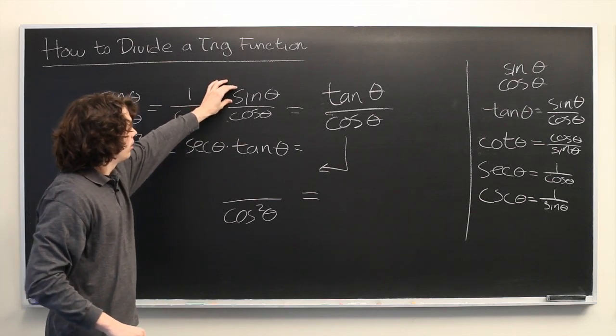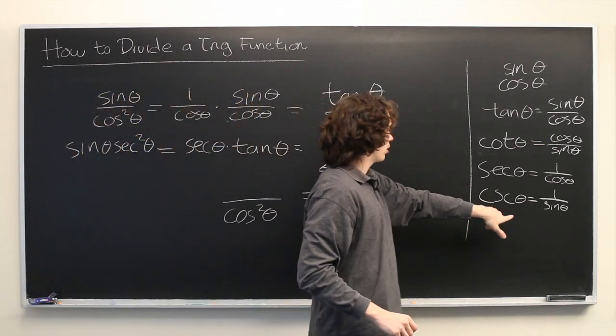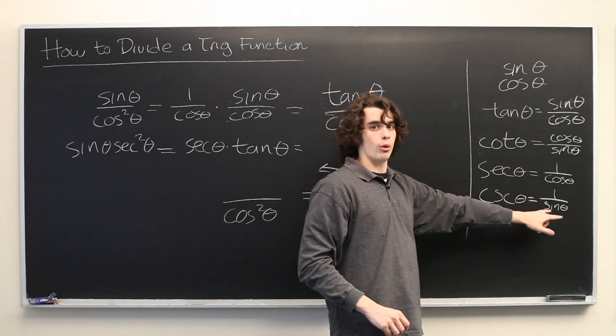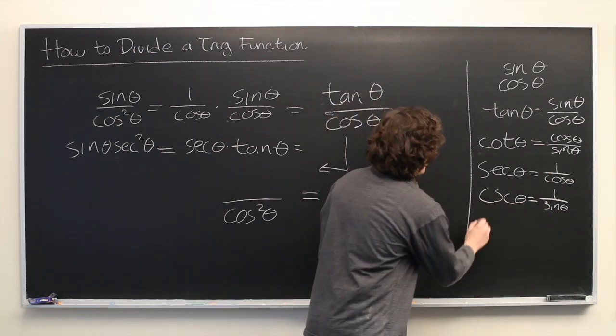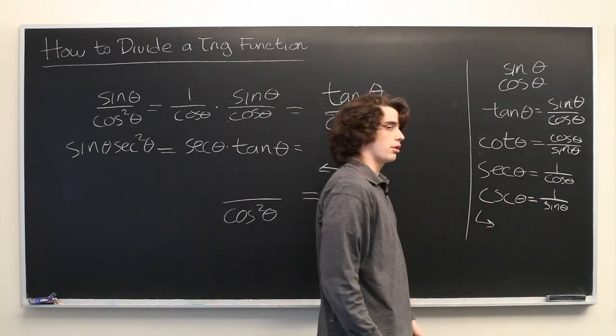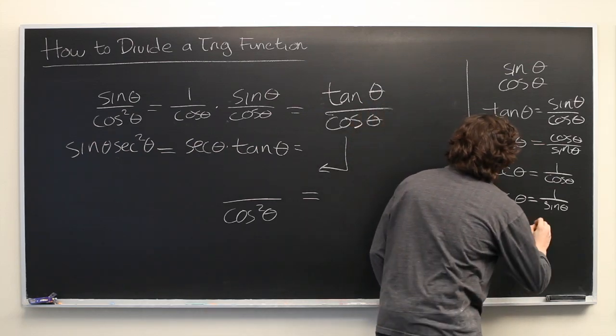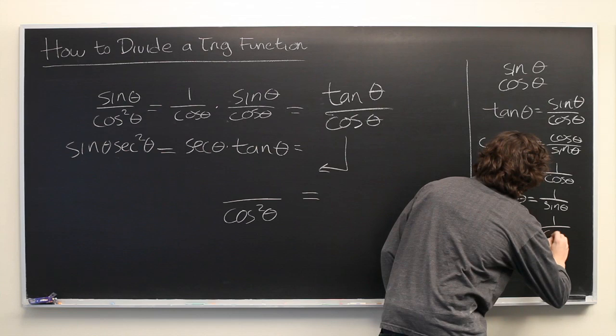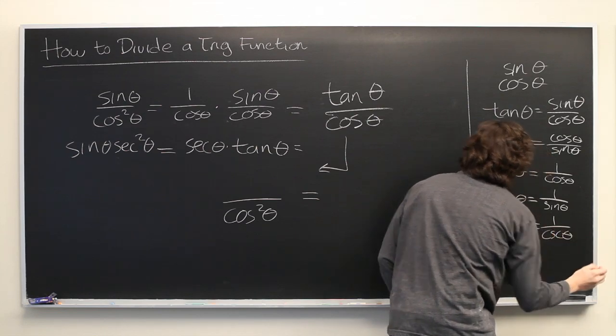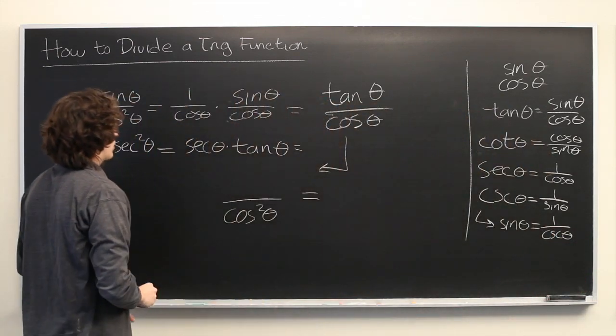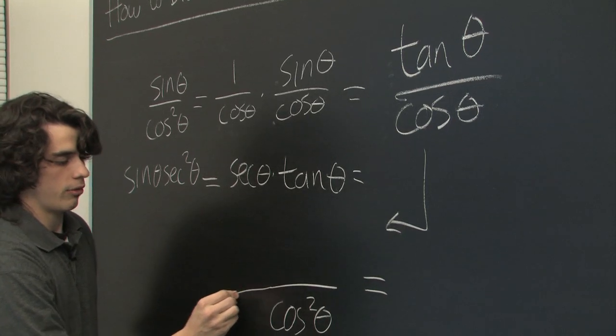But for sine, we look at this formula here. Cosecant of theta is equal to 1 over sine theta, but the inverse is also true. We can write sine theta as 1 over the cosecant. So, we'll extend this out a little bit farther.